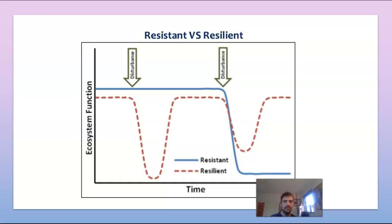Looking at the graph, you can see which is resistant and which is resilient. The resistant ecosystem shows little change during a disturbance — until it really hits hard. The resilient ecosystem gets affected and bounces right back, then gets affected again and comes back again. Go ahead and pause the video to look at this graph and make sure it makes sense.